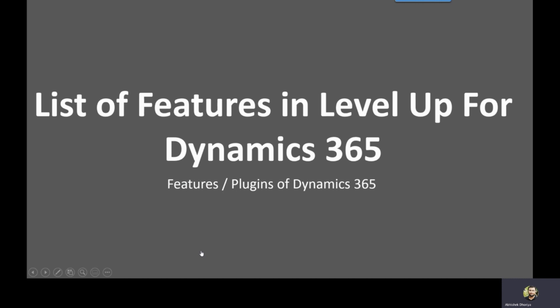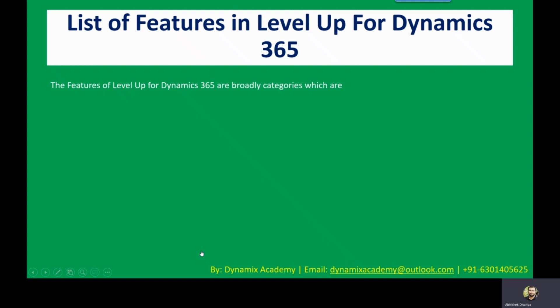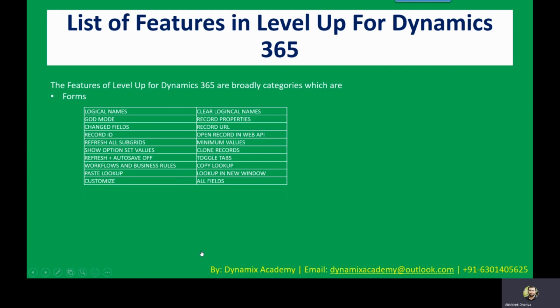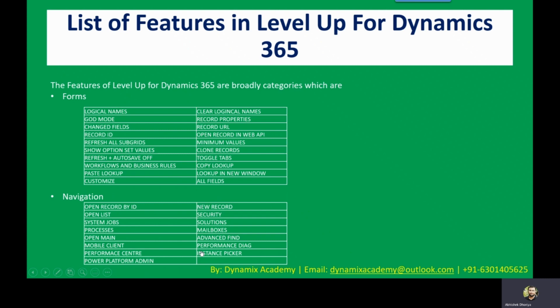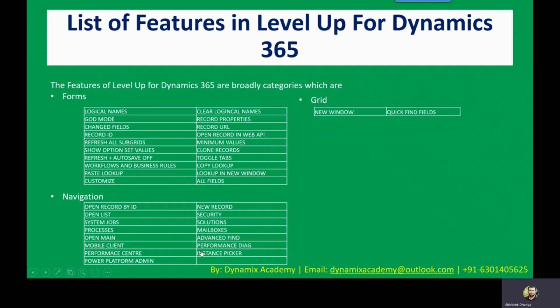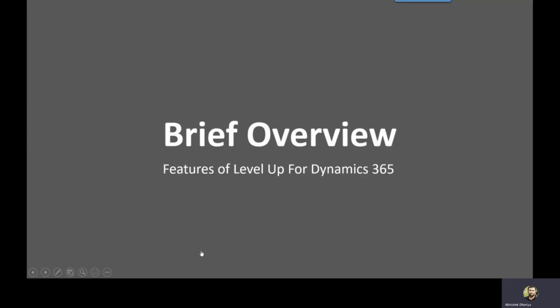There are many different features or plugins available in Level Up for Dynamics 365, which can be broadly categorized into three categories. First is Forms — actions you can take on a particular record form. The next category is Navigational actions, which allow you to navigate to specific types of records or perform navigational operations within Dynamics 365. Lastly, there are Grid actions, which are actions you can take on grids or subgrids on your screen.